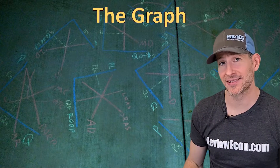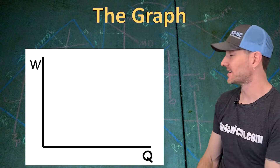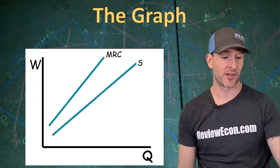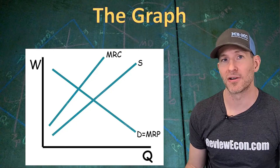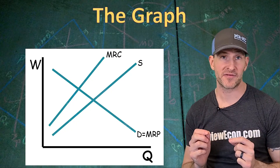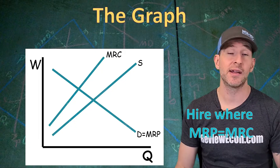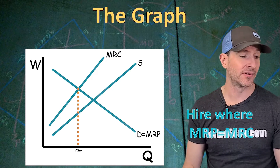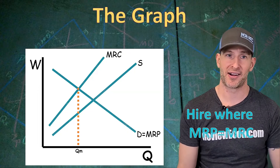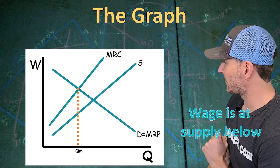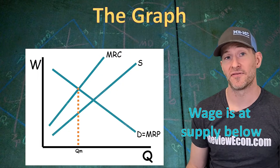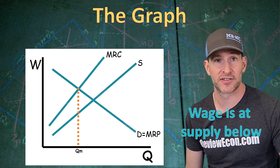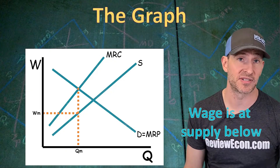Now let's go over how to make this graph from start to finish. We have quantity on the x-axis and wage on the y-axis. First, put in the upward sloping supply of labor with the marginal resource cost above it, then add the downward sloping marginal revenue product curve. Just like a firm in a perfectly competitive factor market, this firm hires the quantity where marginal revenue product equals marginal resource cost. Drop down from that intersection — that is the quantity this monopsony will hire. For the wage, look at the supply curve below that intersection and read across to the y-axis — that is the wage this monopsony will pay.